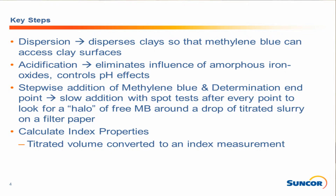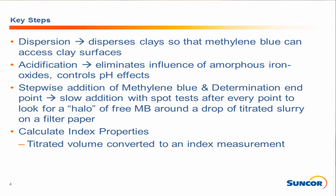Acidification is the second step — it eliminates the influence of amorphous iron hydroxides and controls pH effects. The next step is a stepwise addition of methylene blue: you have your slurry, you're adding methylene blue, and you take a small aliquot with a pipette and do a spot test on filter paper. You're looking for a halo of methylene blue around the endpoint. People often think this is inaccurate, but all other tests for clays are even more inaccurate, and with the right calibrations, standards, and training it's quite repeatable and very useful. Finally, you calculate your index properties.